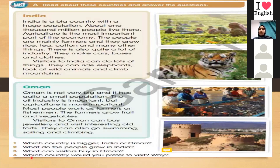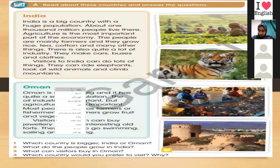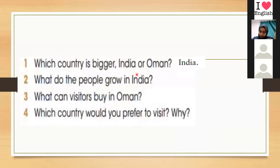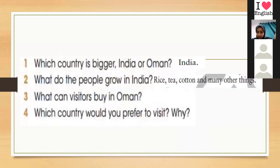Which is bigger, India or Oman? The first question: India is bigger than Oman because we said India is a big country. What do people grow in India? We say rice, tea, cotton, and many other things. What can visitors buy in Oman? We say jewelry. Which country would you prefer to visit and why? Aisha says Oman, Rubin says India.